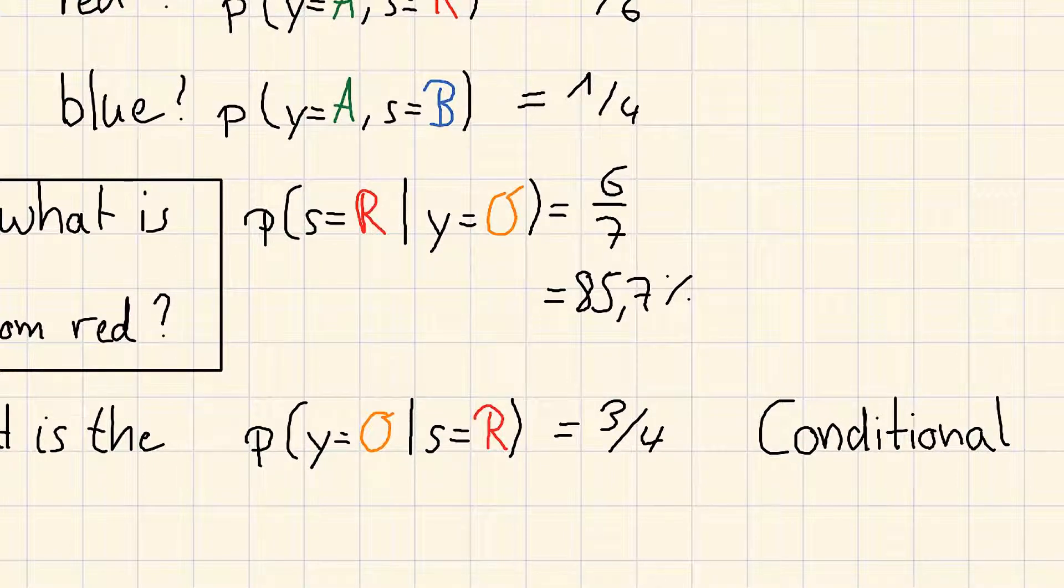The difficult conditional probability that you compute given a data point, we call posterior probability.